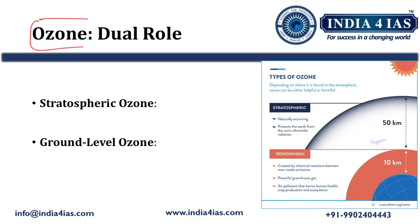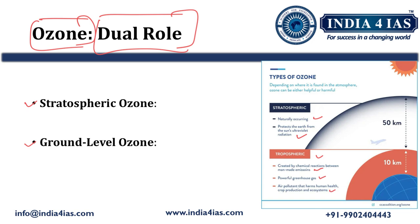Coming to the significance of ozone, it has a dual role to play. In the stratosphere, it is naturally occurring and protects the earth from the sun's ultraviolet radiation. Whereas at the troposphere, ozone is created by chemical reactions between man-made emissions, and it is a powerful greenhouse gas. At the tropospheric level, ozone is not good for living beings.